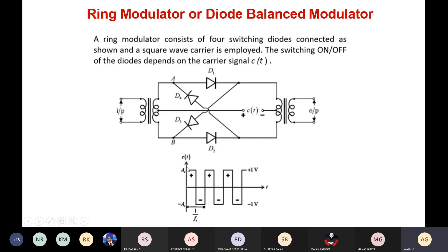The carrier is a square waveform with positive and negative peaks of plus one and minus one. The time period is 1/fc, so c(t) represents a square wave acting as the carrier signal. The input message signal is applied, and the diodes switch on and off based on the operating cycle of the carrier waveform.